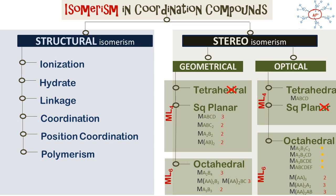Coordination compounds have a central metal ion surrounded by ligands. In this video we will give you a summary of isomerism in coordination compounds. Isomerism in coordination compounds is similar to isomerism that we see in organic chemistry or other such compounds. We have structural isomerism and stereoisomerism, which is isomerism in space. Stereoisomerism is further broken into geometrical isomerism and optical isomerism.